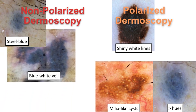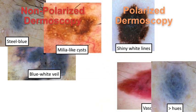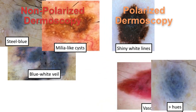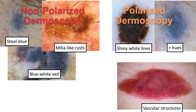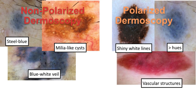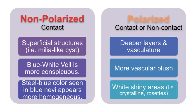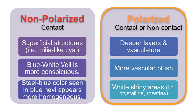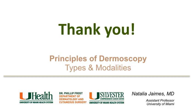Blue-white veil due to orthokeratosis and milia-like cysts are better visualized with non-polarized light, while more blue hues in blue nevi and more vascular structures are better visualized with polarized light. Since polarized light is able to see deeper structures like vessels and shiny white structures, this will be the preferred mode to perform skin cancer screening. With this, I thank you for your attention, and I hope you enjoyed it.